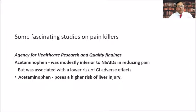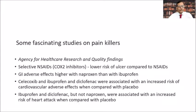Studies from the Agency for Healthcare Research and Quality found that acetaminophen was modestly inferior to NSAIDs in reducing pain but was associated with a lower risk of gastrointestinal adverse effects. Acetaminophen also poses a higher risk of liver injury. Selective NSAIDs or COX-2 inhibitors have lower risk of ulcers compared to NSAIDs. Gastrointestinal adverse effects are higher with naproxen than ibuprofen. Celecoxib, ibuprofen, and diclofenac were associated with increased cardiovascular risk, and ibuprofen and diclofenac — but not naproxen — were associated with increased risk of heart attack compared to placebo.